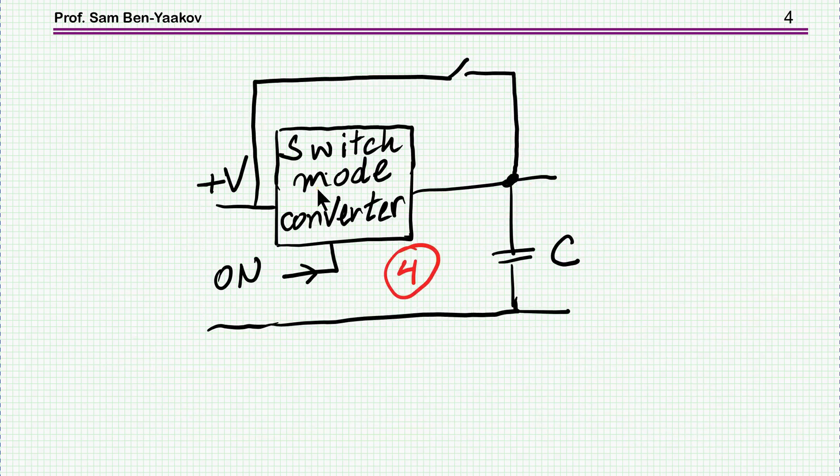Finally, we have a fourth scheme in which we have a switch mode converter which is charging the capacitor. This could be either from the high voltage or from an auxiliary power supply. Once the capacitor is charged, we turn on the main switch.